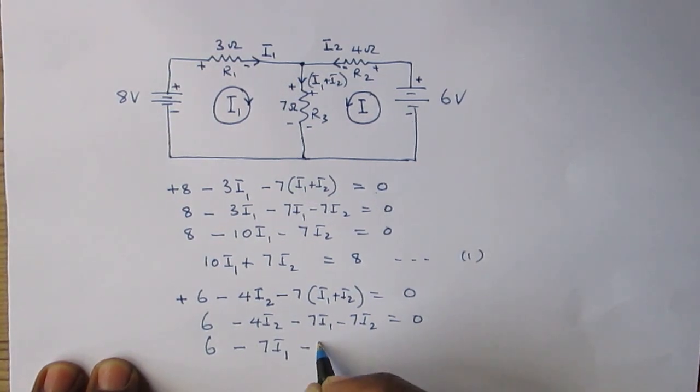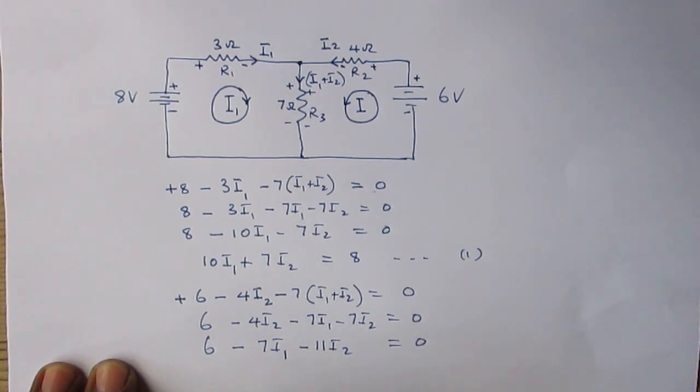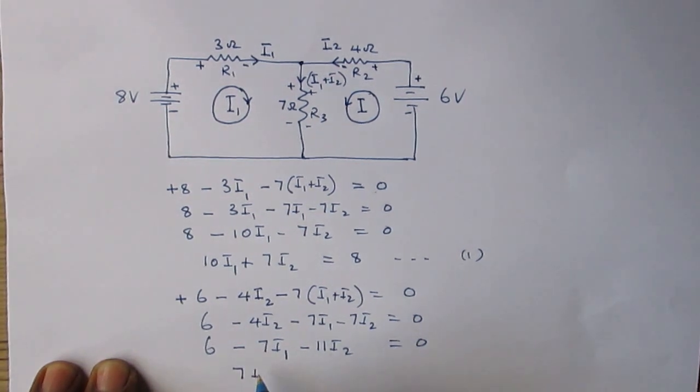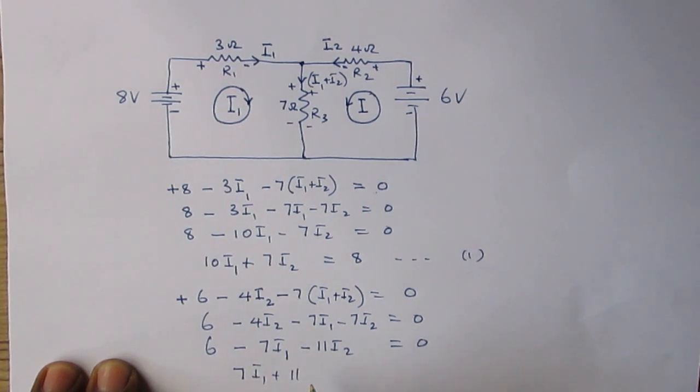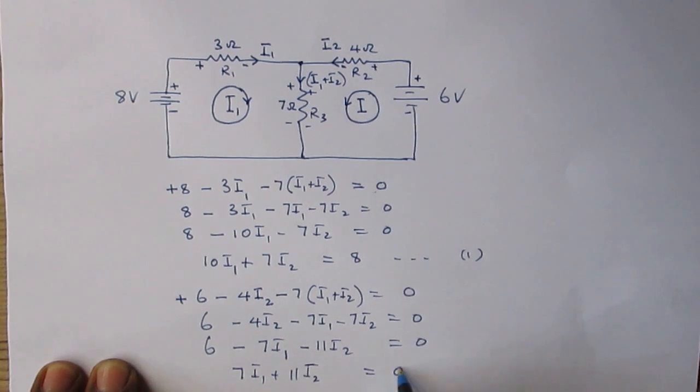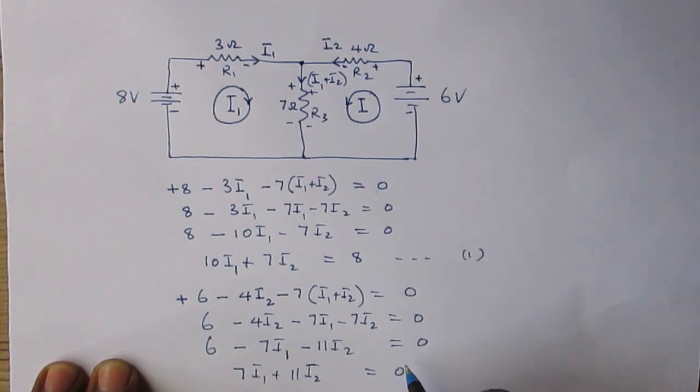Like on the left-hand side, we put all the I1's and I2's on one side. We get 7I1 plus 11I2 equals 6, and that gives us equation 2.